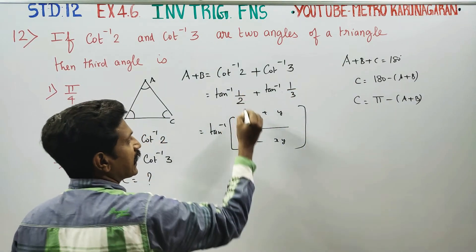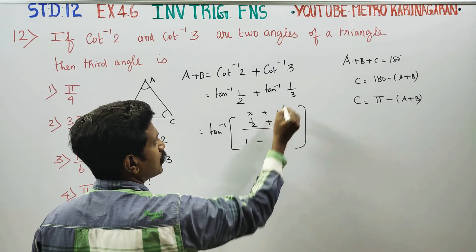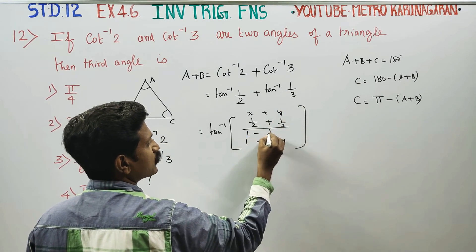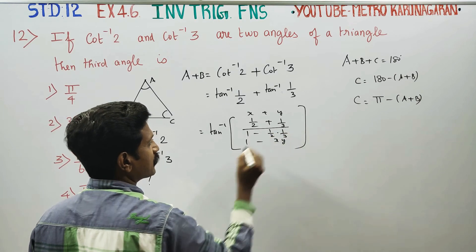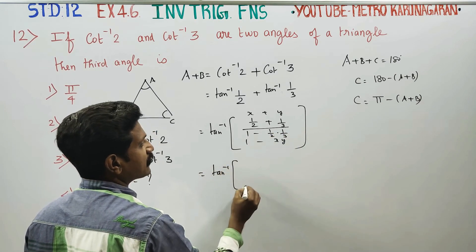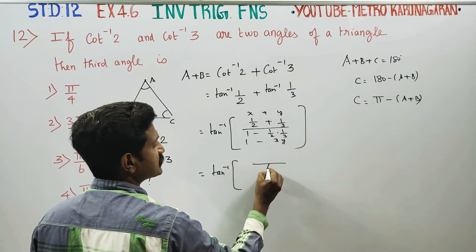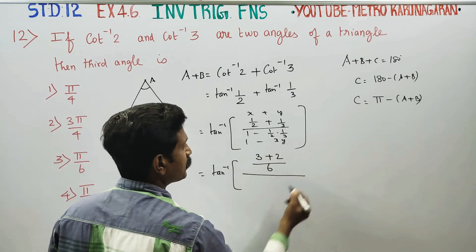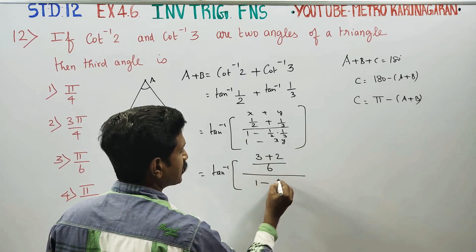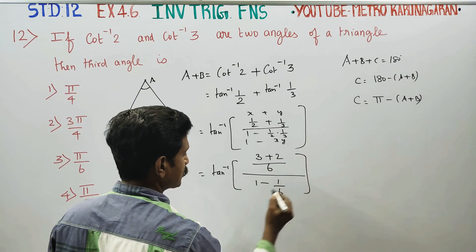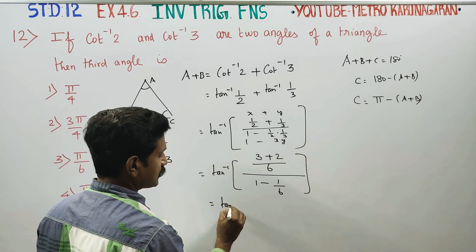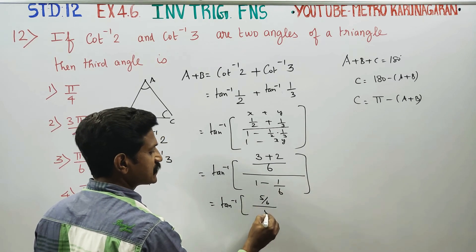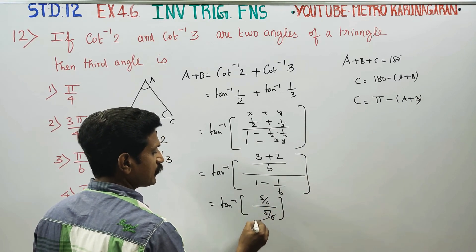Now x value 1 by 2, y value 1 by 3. 1 minus xy: 1 minus 1 by 2 into 1 by 3. You will be getting tan inverse of, the LCM is 6, cross multiply, 3 plus 2 whole divided by 1 minus 1 by 6, is equal to tan inverse of 5 by 6. Cross multiply, 6 minus 1 is 5 by 6, full cancel it.